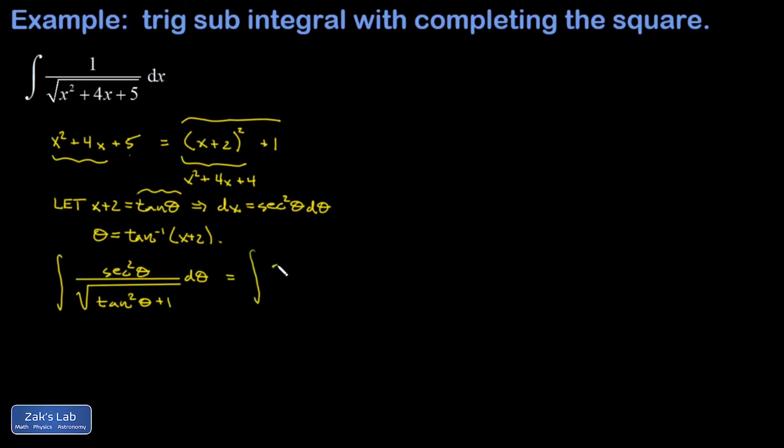Now we use the Pythagorean identity for secant and tangent. Tangent squared theta plus 1 is secant squared theta, so that denominator gives us just a secant theta. One factor of secant is going to cancel and I end up with the integral of secant theta d theta.